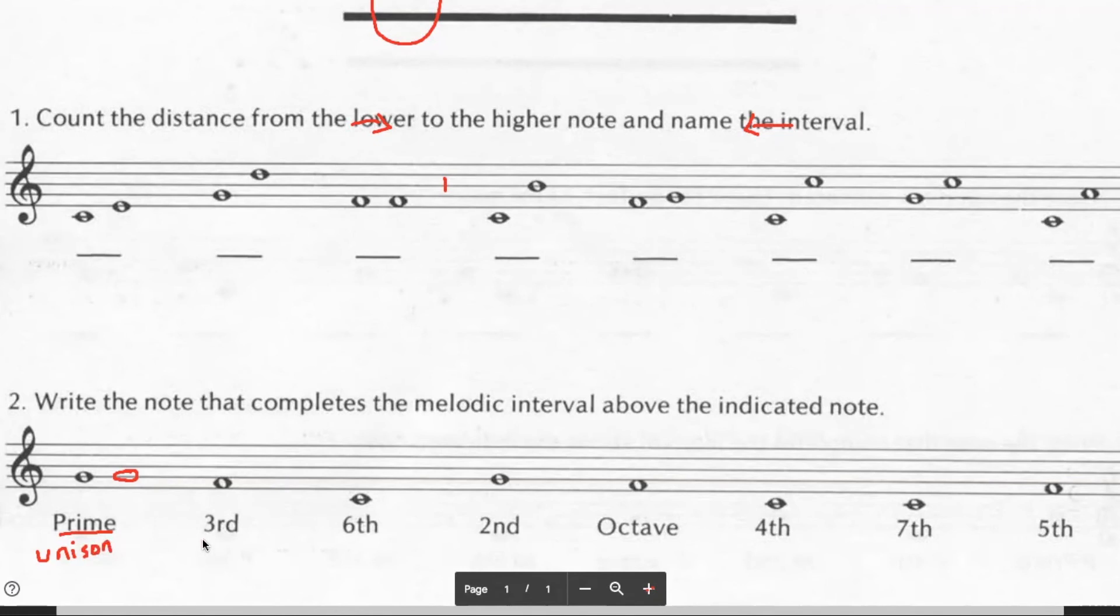Okay. Now the next question is a third. So now we have to go up a third to make this a melodic interval. If it was harmonic, we would have to stack it. So here's note one, two, three. So this would be our third. All right. And let's see how you do with the next set of melodic intervals.